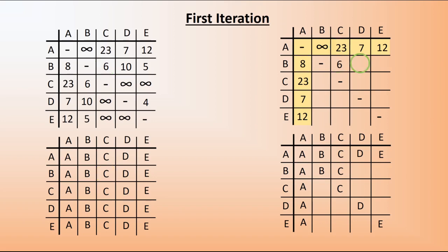For the next cell, the corresponding value is 10. We compare 10 to 7 plus 8, which is 15 — bigger than 10, so the 10 goes back and D is copied across. From B to E is 5. Since 5 is smaller than 8 plus 12, the 5 goes in and E gets copied across. So far, no change is necessary. From C to B, we have 6, which is smaller than 23 plus infinite, so 6 goes in and B is copied across.